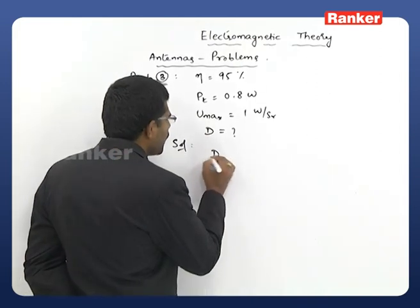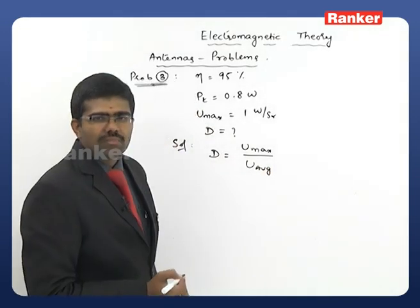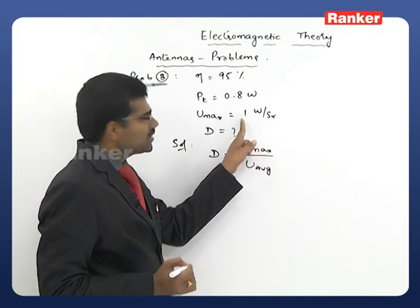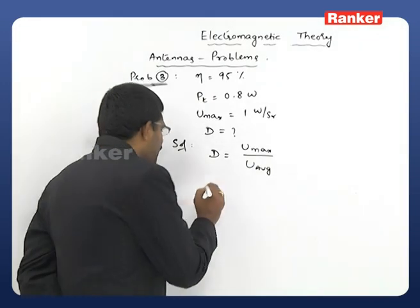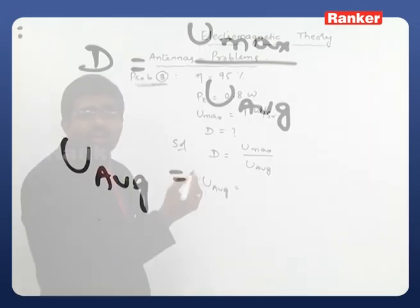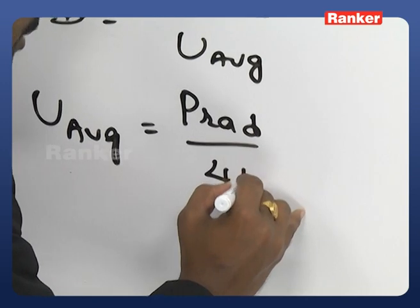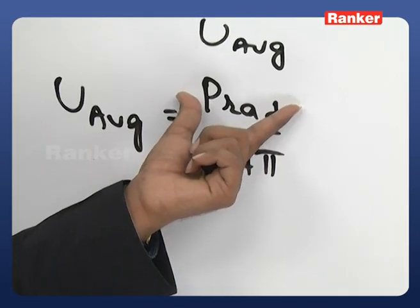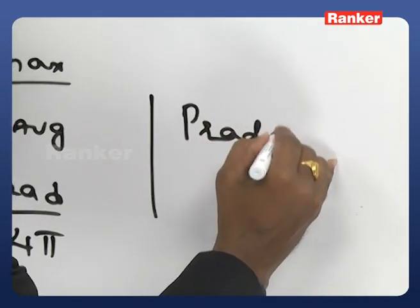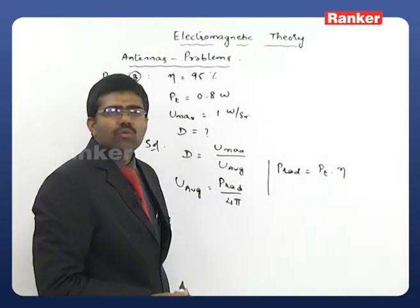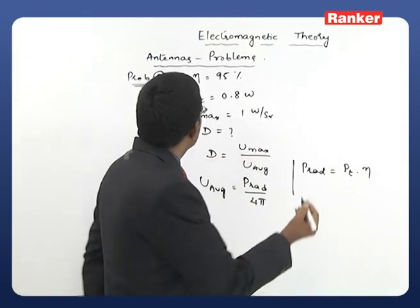Directivity D = U_max / U_avg. The maximum radiation intensity is given as 1 W/sr. Average radiation intensity U_avg = P_radiated / 4π. The radiated power = P_transmitted × η = 0.8 × 0.95.